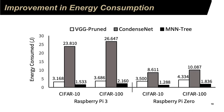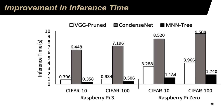This slide shows the energy consumption when running this method on Raspberry Pi 3 and Raspberry Pi Zero. We compare with VGG and CondensedNet. This method consumes much less energy than the other two methods. In terms of inference time, it takes as little as 0.36 seconds for CIFAR-10 on Raspberry Pi 3 and below 2 seconds on Raspberry Pi Zero.